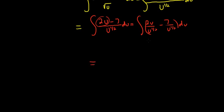So this is equal to, so there's a 1 here so you could subtract. So you get 2u to the 1 half minus, and then you can bring this upstairs. So it's 7u to the negative 1 half du.